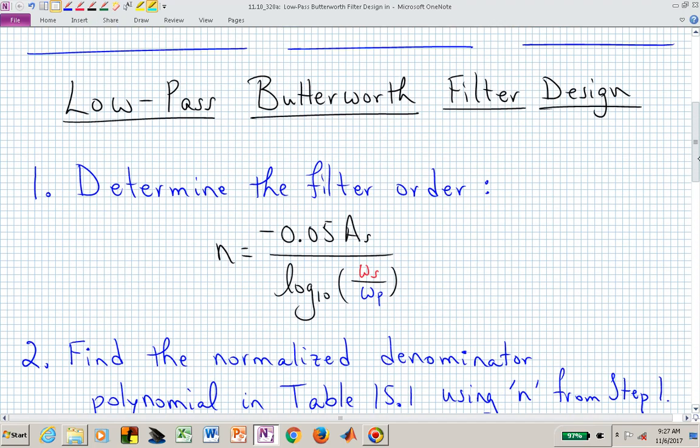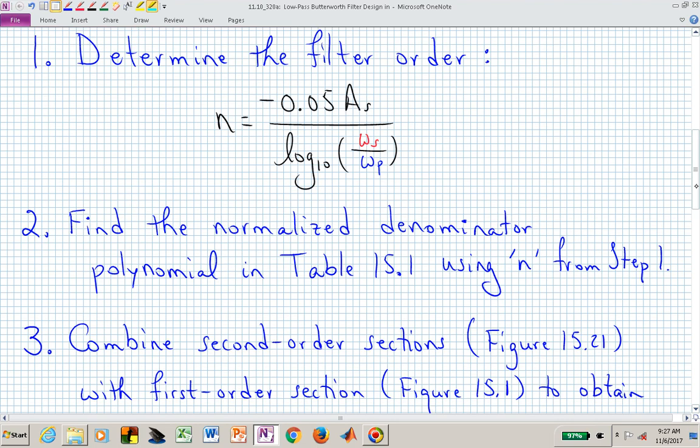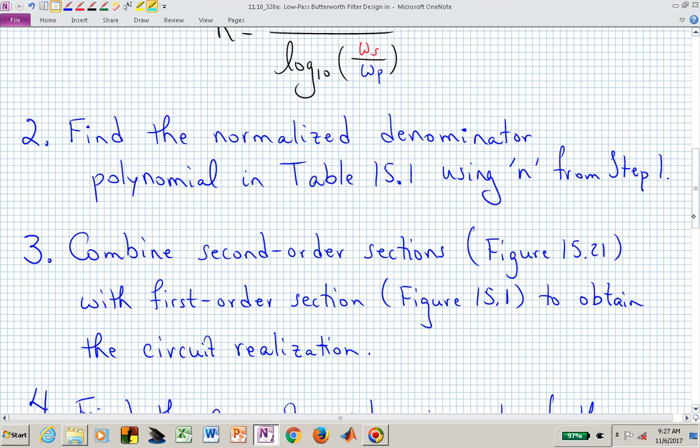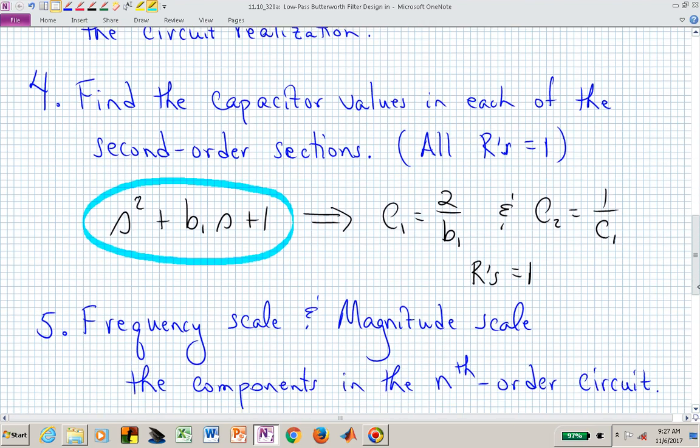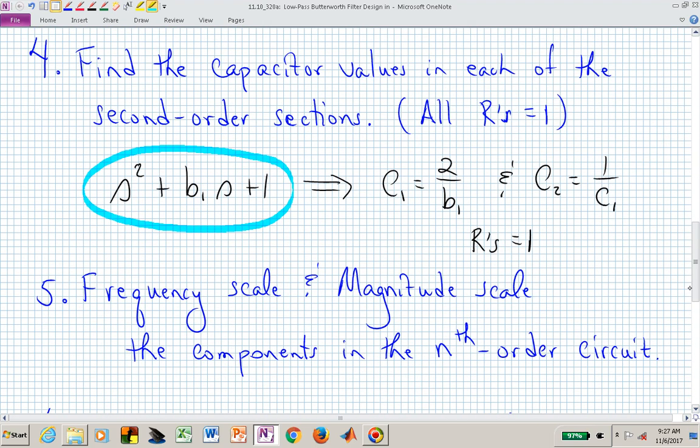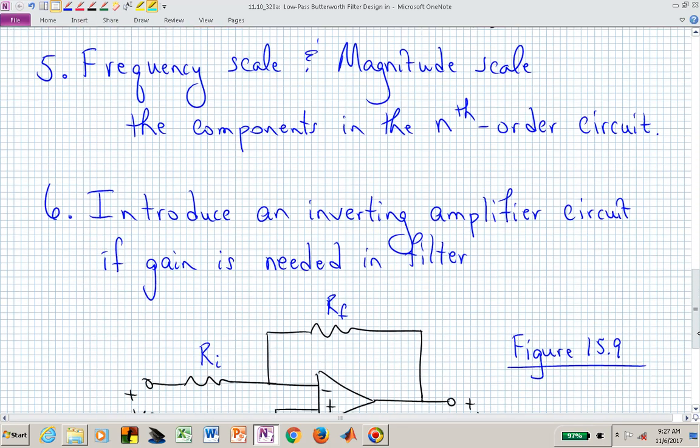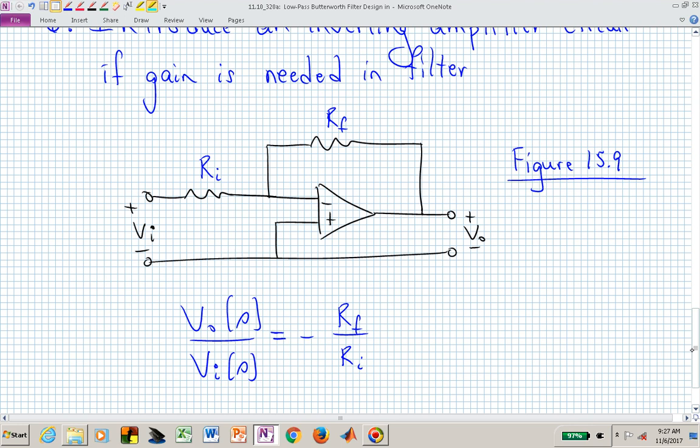Find the filter order, go to the row in table 15.1, figure out how many second order sections you need, find the C's in each of those second order sections, scale magnitude and frequency to accomplish what you need for bandwidth and values of your parameters. And then if you need some gain, go ahead and introduce that gain with another section obtained from this op amp circuit in figure 15.9.